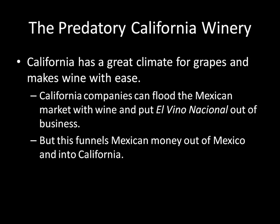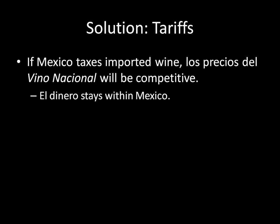Now consider a predatory California winery. California has a great climate for grapes and can make wine with ease, so these California companies can flood the Mexican market with wine and put El Vino Nacional out of business. This is a problem for the Mexican government, because all of the Mexican wine money is being funneled out of Mexico into California. One solution is to impose tariffs: if Mexico taxes the imported wine from California, the prices for El Vino Nacional's wine become competitive, and the money that would otherwise funnel out of the country stays in Mexico.